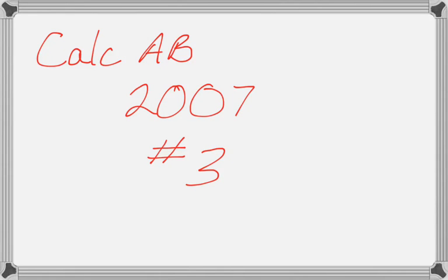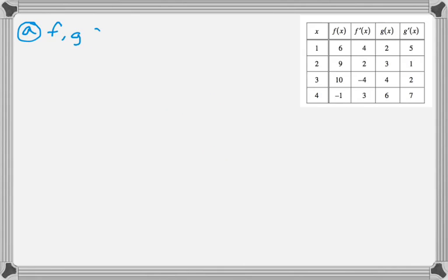Alright, this is number 3 from the 2007 Calc AB exam, and it's actually one of the lowest scoring questions in the history of the AP exam, and it's not really clear why, and you'll see as we go through. Alright, well, we have a table of values, and we're told that f and g are differentiable,